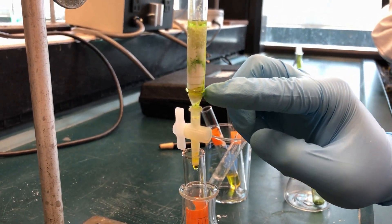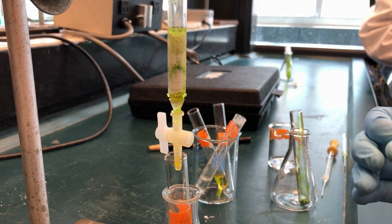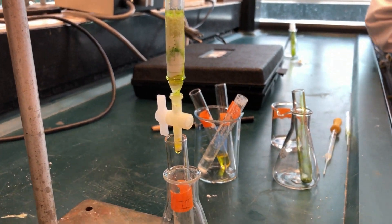Here you can see our green band is moving down. Once the green band is almost at the bottom, switch to test tube 4 to collect the green pigment.